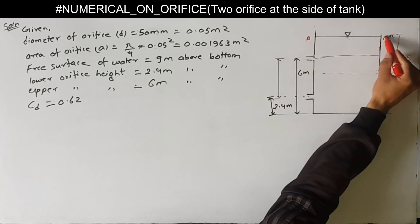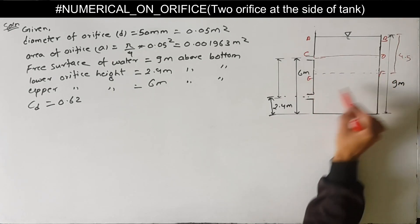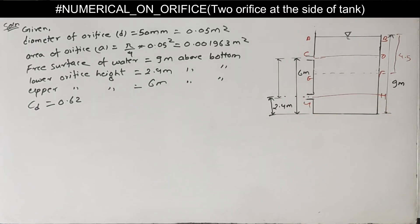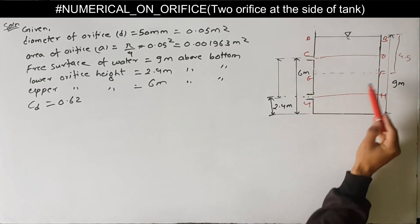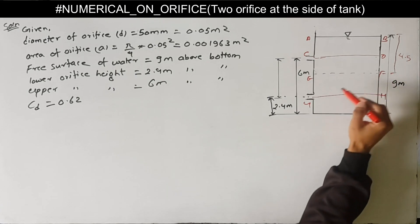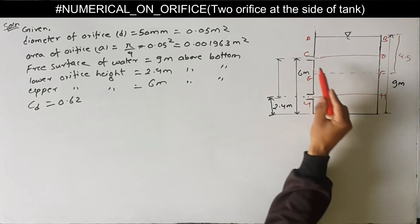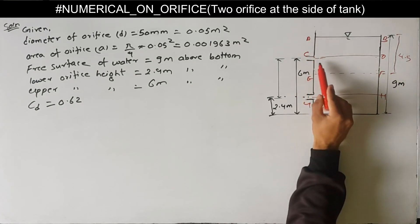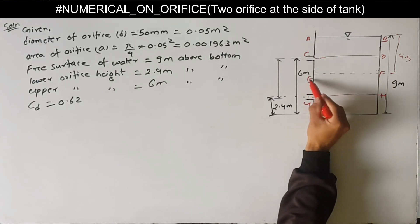We label the diagram: A, B is the free surface; C, D is the level of the upper orifice; E, F is 4.5m below the free surface; and G is at the bottom. We have to calculate the total time to fall the level of water from A,B to E,F in two steps. First we calculate the time to fall from A,B to C,D, then from C,D to E,F, and add these two values to get the total time.